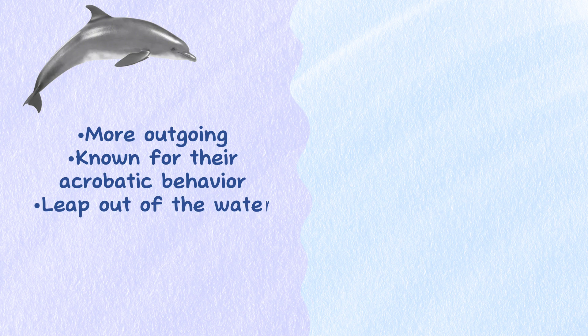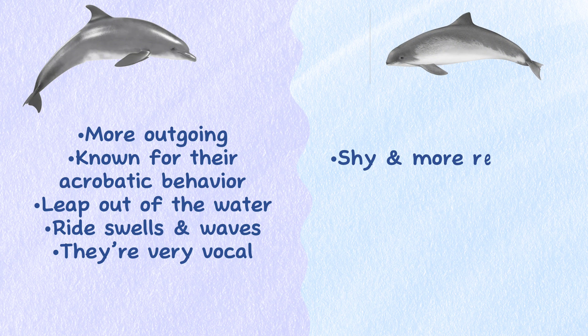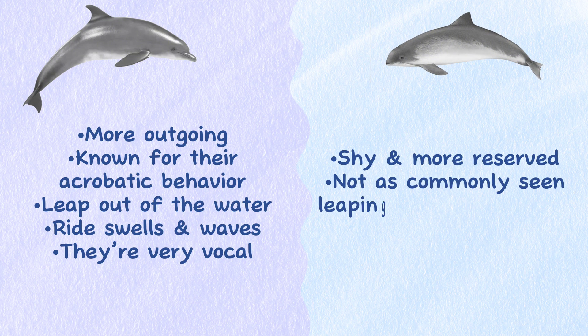Behavior. Dolphins are typically more outgoing and are known for their acrobatic behavior. They often leap out of the water, ride swells and waves, and they're very vocal. Porpoises are usually shy and more reserved; they're not as commonly seen leaping out of the water or interacting with humans.